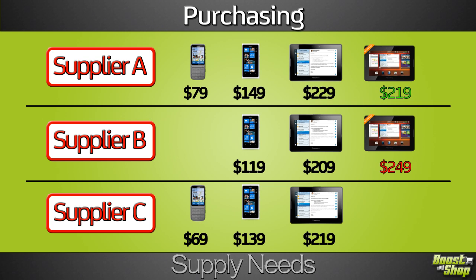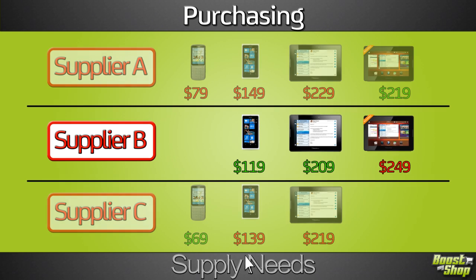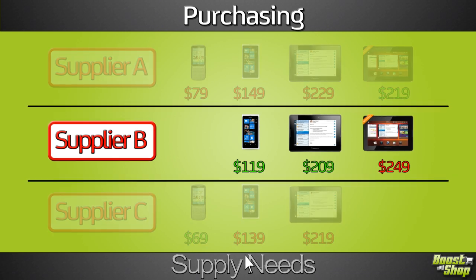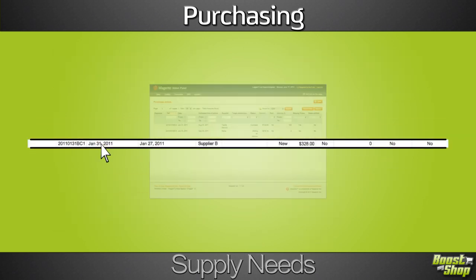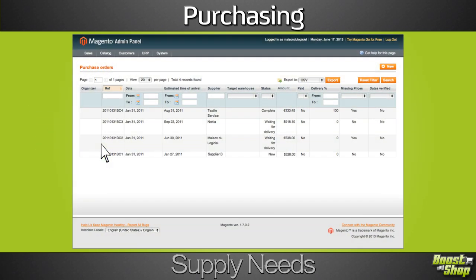For each product, ERP also displays the different buying prices by supplier to help you optimize your cost. Once you have identified the products to purchase, a simple click converts the product list into a new purchase order.